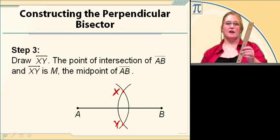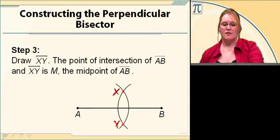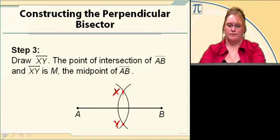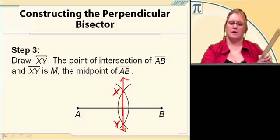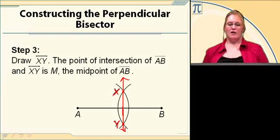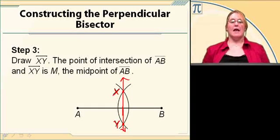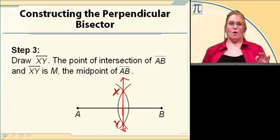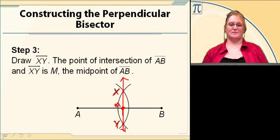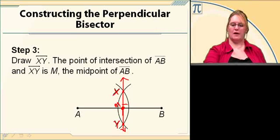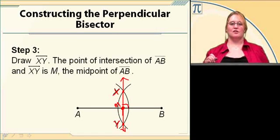Now take your straight edge and draw a line through those two points. Make sure you put arrows because we're talking about a line. And there is our perpendicular bisector. Remember, a bisector goes through the midpoint, so where it touches AB is the midpoint — we'll label that M. We can also draw a 90-degree angle symbol to show it's perpendicular.